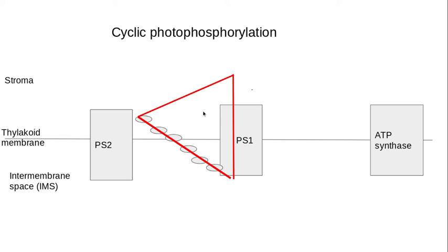Because by still passing the electrons through the electron carriers, it means that hydrogen ions are still going to be actively transported into the intermembrane space. I'm still going to get that proton gradient, and therefore chemiosmosis can occur.